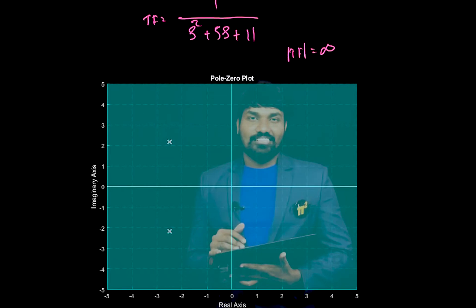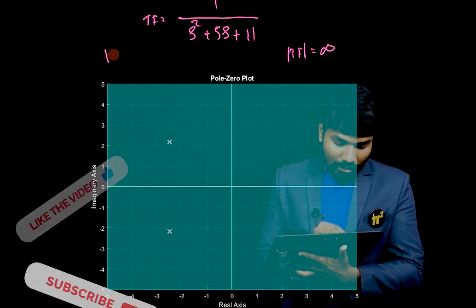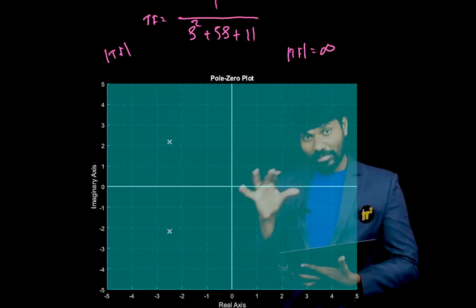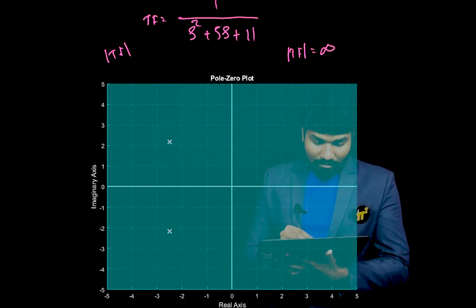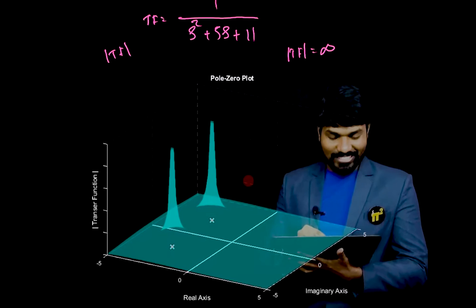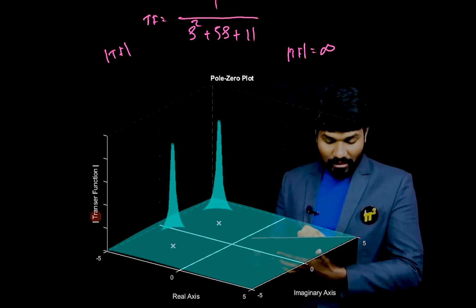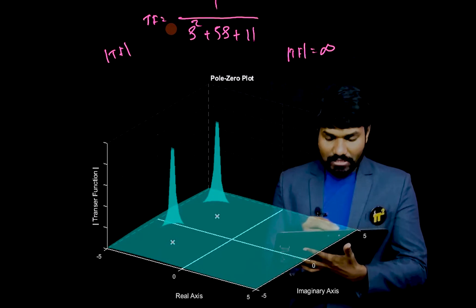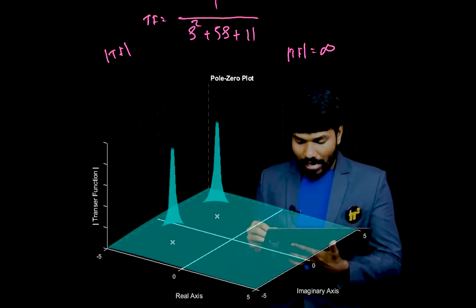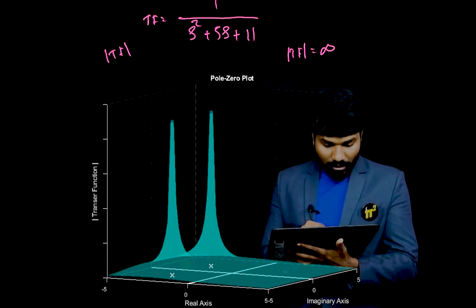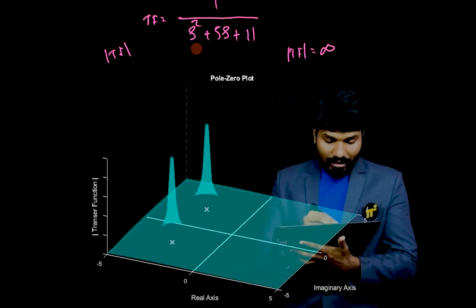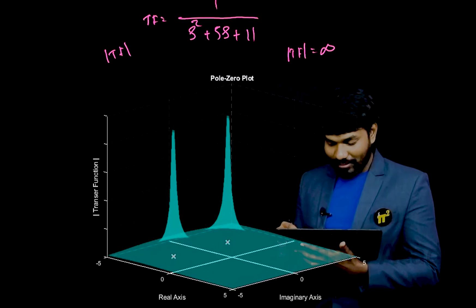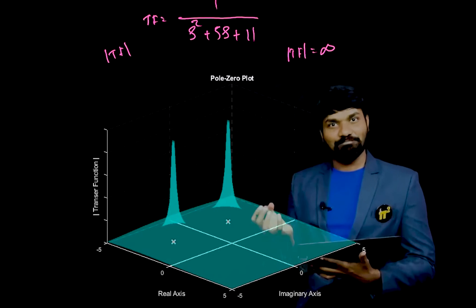Now, there is another axis — the z-axis — which represents the magnitude of the transfer function. On paper you cannot draw that z-axis, but with our application I can visualize it. Let me rotate this plot. Now see the z-axis — it shows the magnitude of the transfer function across the complete s-plane. At a particular value of s, the magnitude shoots up to infinity. And now see how it is appearing — it is appearing like two poles projected upward. Hence, they are called poles.